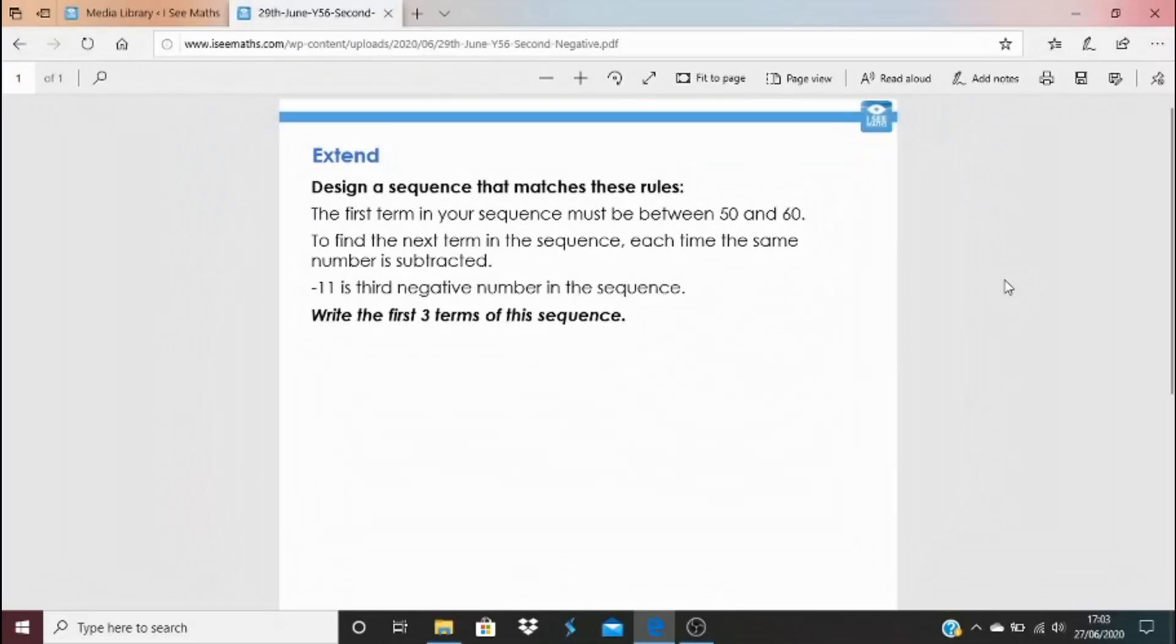So if you want to have a go at an extend task, click on the blue link underneath the video. It's a slightly different twist on the task that you've already had a go at. So this time, the first term in your sequence must be between 50 and 60. Again, to find the next term in the sequence, the same number is subtracted. And this time, minus 11 is the third negative number in the sequence. But what are the first three terms of the sequence? Can you find different ways that that can be done? Think about those steps as well. So how many different ways can it be done? How many different steps can we be going down in?